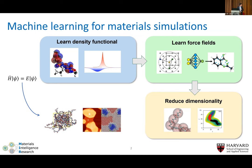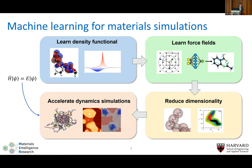Once you put this all together — starting from the fine quantum picture, learning density functionals, then learning machine learning potentials, then reducing dimensionality and accelerating molecular dynamics with sampling — you could get to large-scale simulations. This is the overall vision: pieces connecting together to enable realistic material simulations and understanding of complex phenomena.